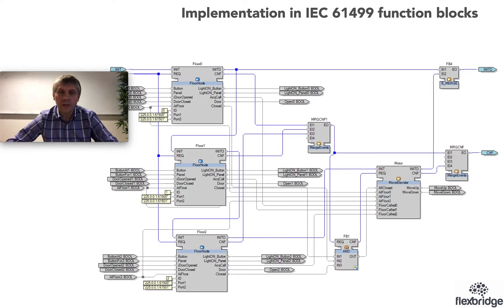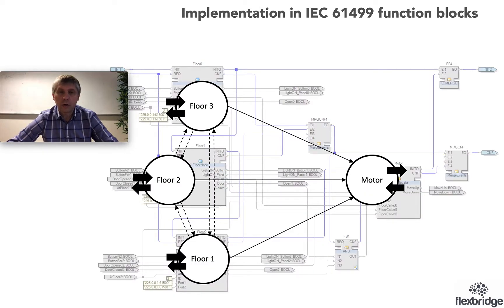In IEC 61499 function blocks, the structure of the application is exactly the same. We have three function blocks corresponding to each floor, so we call them floor nodes. Three identical blocks, three instances of identical blocks, and then we have a motor control called 'move elevator'. That's exactly following our topology described before. We have floor nodes communicating with each other and negotiating and then telling the motor where to move.